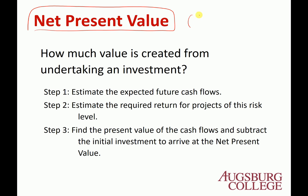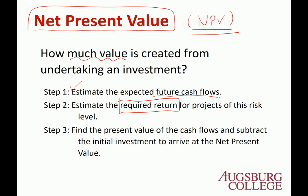The next method is net present value, also called NPV. This is a straightforward concept — it answers how much value is created from undertaking an investment, in dollar terms. We estimate future cash flows, set a required return based on the risk of the project, use that required return as a discount rate R, find the present value of the estimated cash flows, and subtract the initial cost to get the net present value.